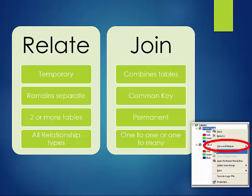A join is useful for combining two tables. Joins work best with a one-to-one or a one-to-many relationship, and you can create a permanent join on the data. When performing joins in a GIS, it's a good idea to validate the join to make sure you're on the right track.